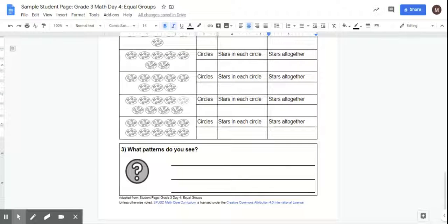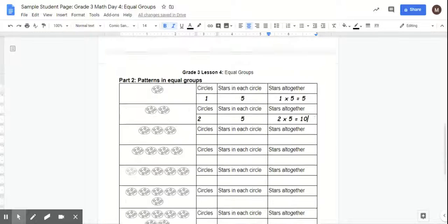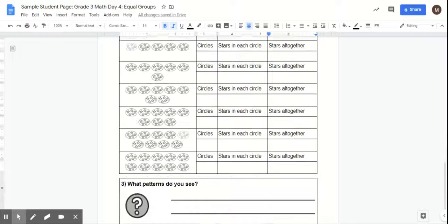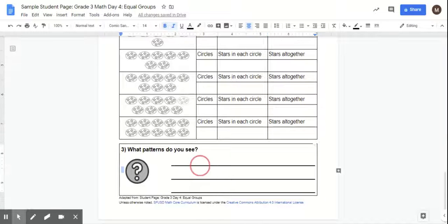And then the last thing that you're going to want to do is what patterns do you see? What are you noticing as the number of circles increases? And what is the product? How does that increase? And so you'll just select this right here. And you can just type your answer right here.